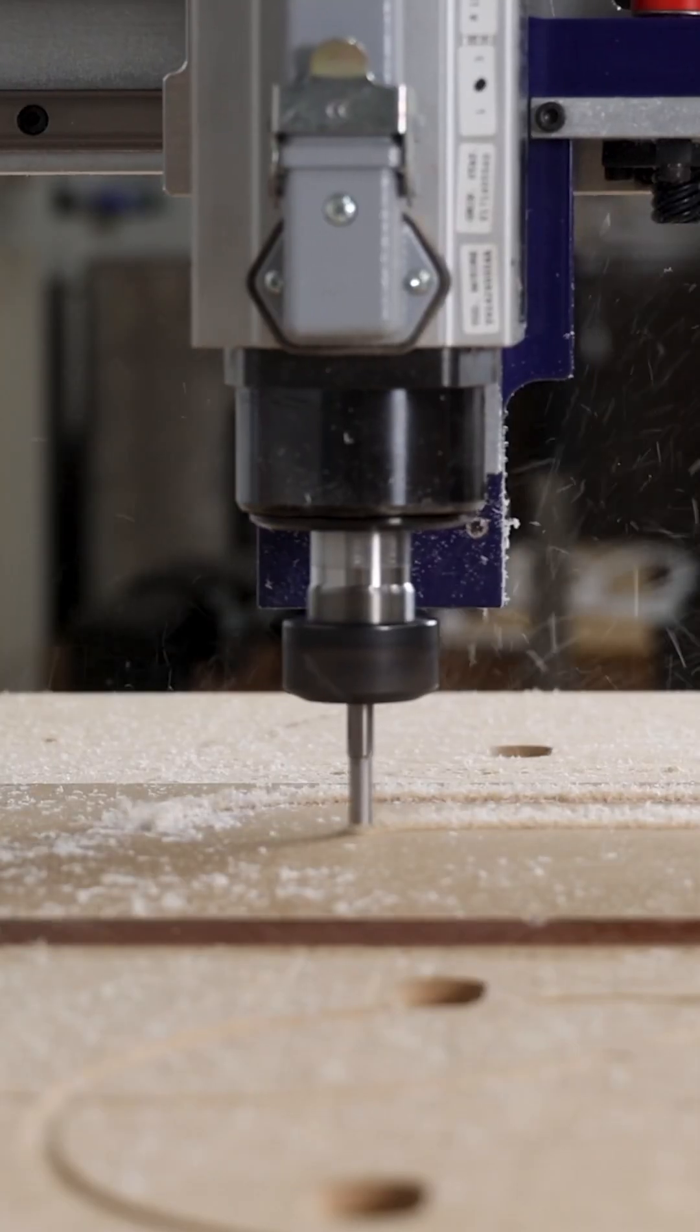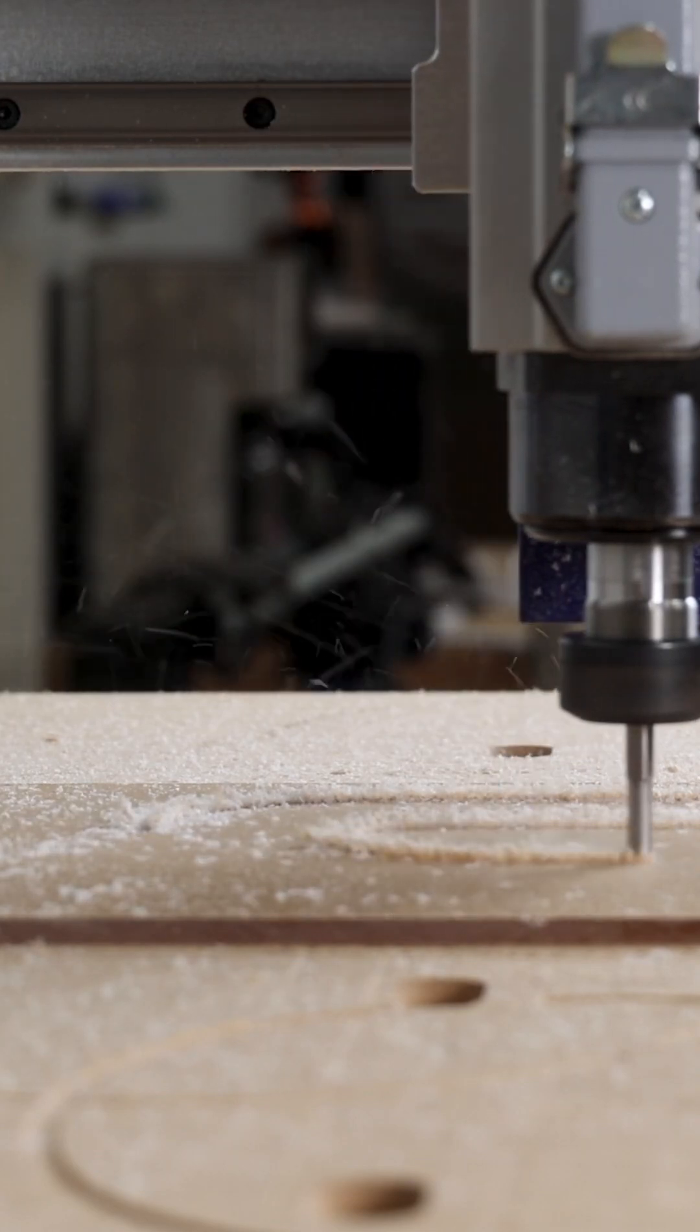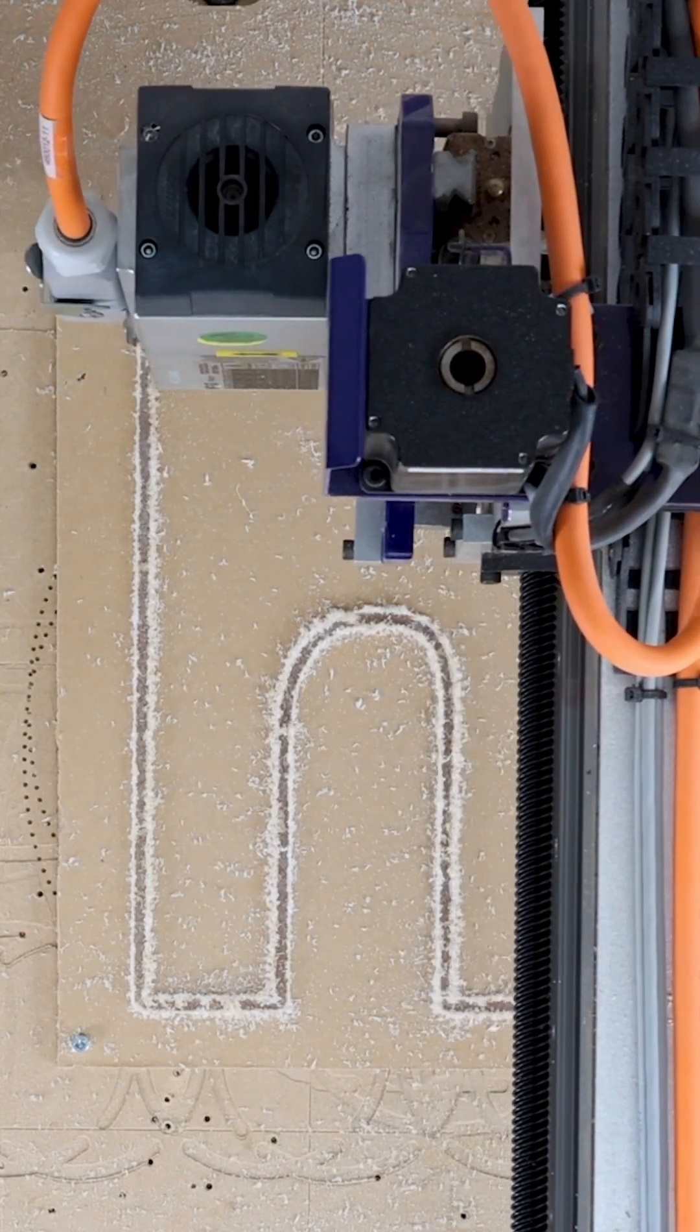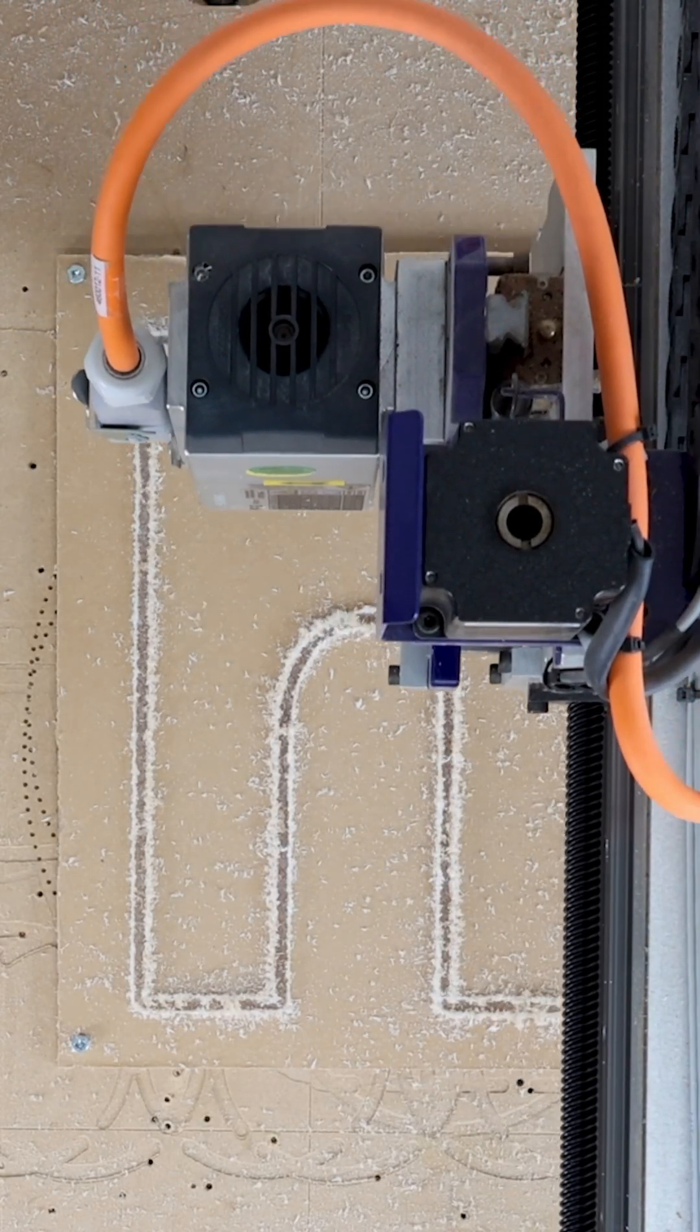Now let's use our ShopBot CNC machine to cut out a reusable acrylic router template. A router template allows us to create repeatable shapes using simple tools.